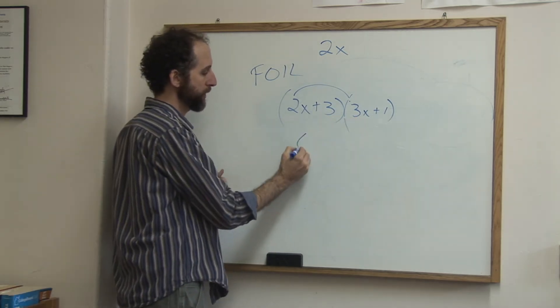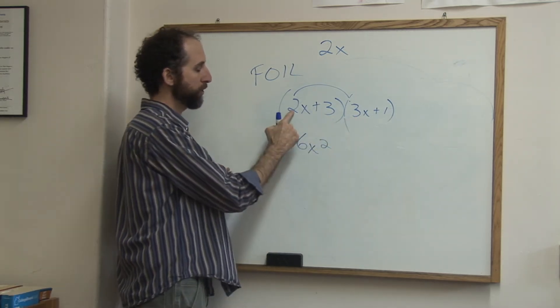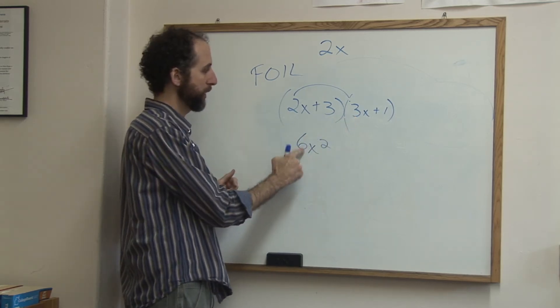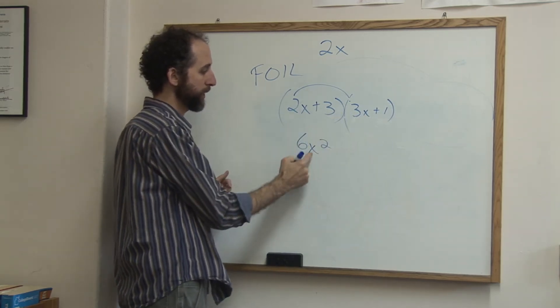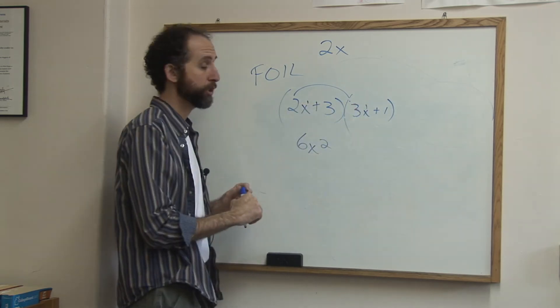2x times 3x is 6x squared. Remember, you do the coefficients, that's the number part, so that's 6, and you multiply the x's. x times x is x squared. There's really a 1 there, right? So you add the exponents.